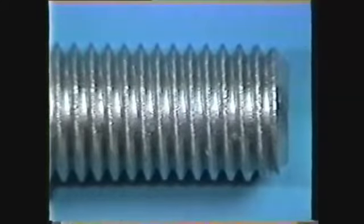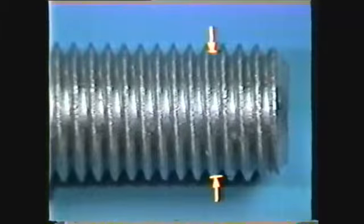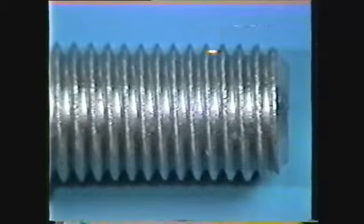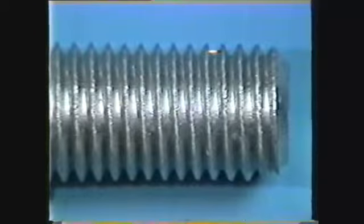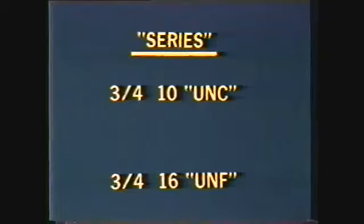The pitch diameter of a thread is the diameter measured between the pitch line on each side. The thread pitch line is approximately halfway down the thread, at the point where the cross section of the thread and the width of the groove are equal. UNC is the series designated for Unified National Coarse Threads, while UNF designates Unified National Fine Threads.